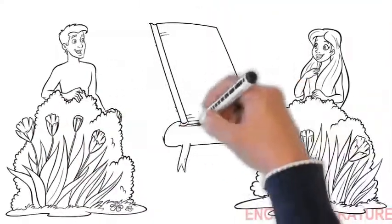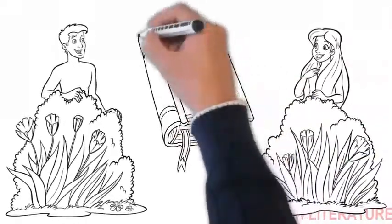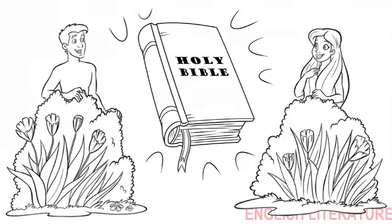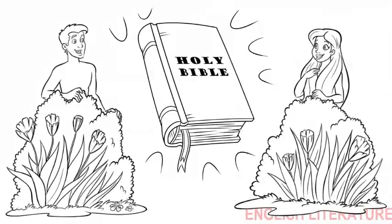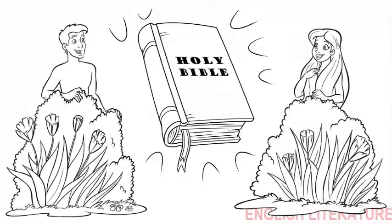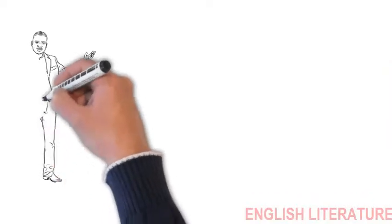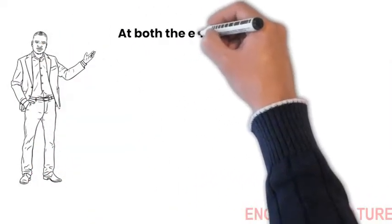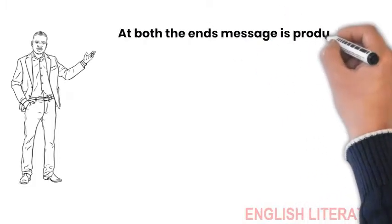As the message is discursively produced, circulated, and used or consumed, there arise distortions or misunderstandings. As the encoded message is not decoded in a desired way, there is a kind of non-identity or lack of equivalence between encoding and decoding. At both the ends, message is produced differently.